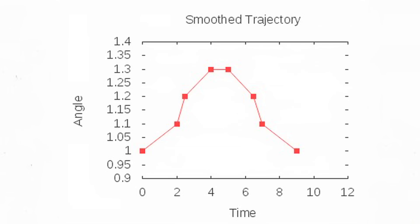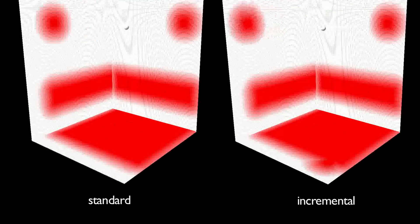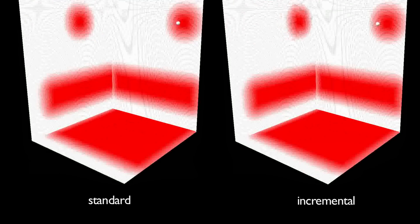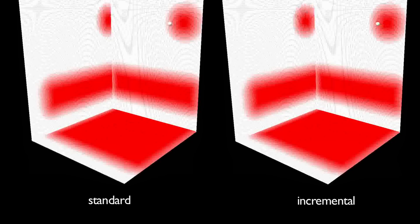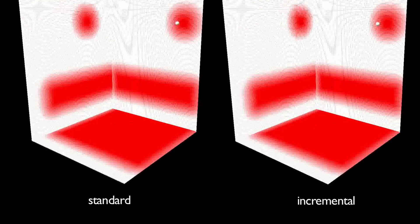The second improvement was made by incrementally calculating distance fields. Here you see an object moving within a virtual environment. On the right, the distance field is updated incrementally. On the left, the entire field is recalculated.